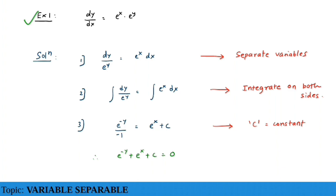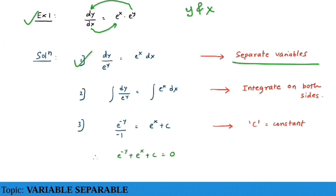As the name suggests, you have to separate the variables. The first step is to separate the variables. We have two variables, y and x. Take all y terms to the left-hand side and all x terms to the right-hand side. So step 1 gives: dy / e^y = e^x dx. The left-hand side has only y terms; the right-hand side has only x terms.